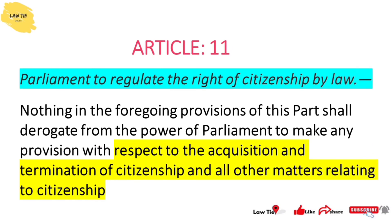Article 11 empowers Parliament to regulate the right of citizenship by law. It means that after 26 January 1950, citizenship rules can be made by Parliament through legislation. Article 11 also provides the basis for the Citizenship Act, which we will see in the next video.